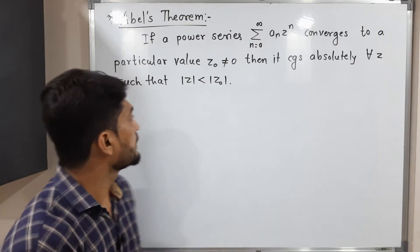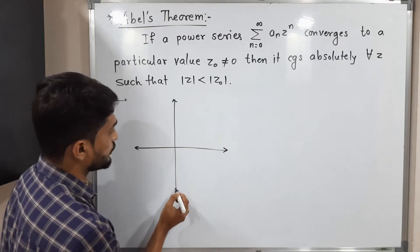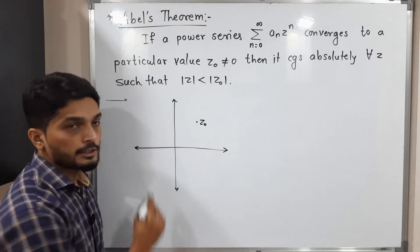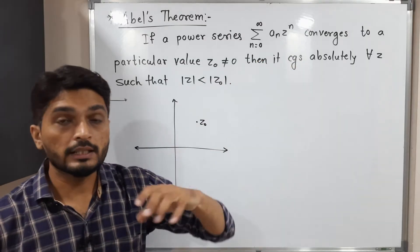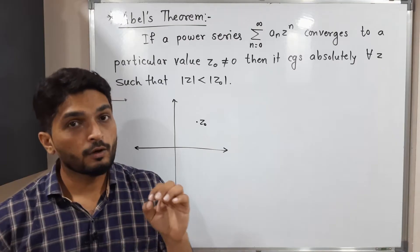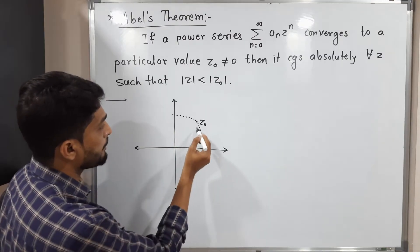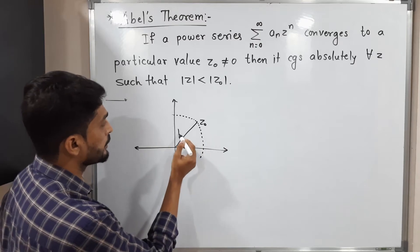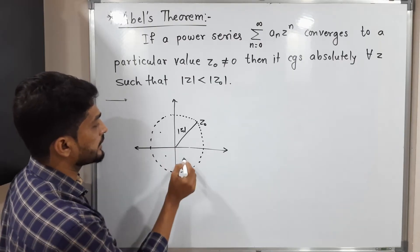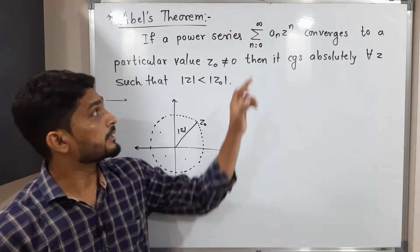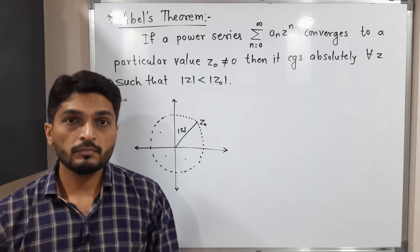Before the proof, let us understand the meaning. In the complex plane, with the real axis and imaginary axis, if you have any point z_naught (not equal to zero) where the series is convergent, and if you draw a circle with center zero and radius mod(z_naught), then for any point selected inside this circle, the corresponding power series is absolutely convergent. This is the statement of Abel's theorem.